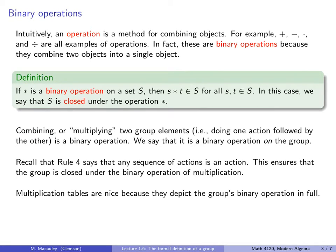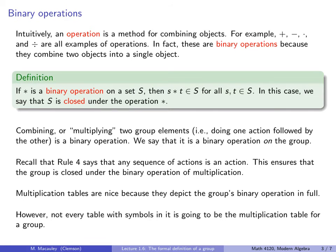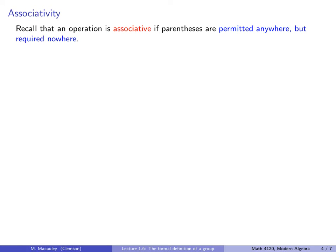Multiplication tables are nice because they depict the group's binary operation in full. You see exactly what happens if you take any S and any T and multiply them together. However, not every table with symbols in it is going to be the multiplication table for a group. You cannot have two of the same element in the same row or the same column, but those are not the only restrictions.